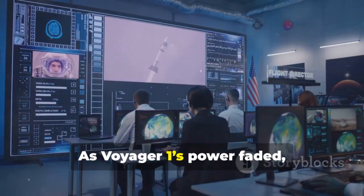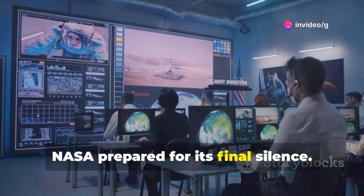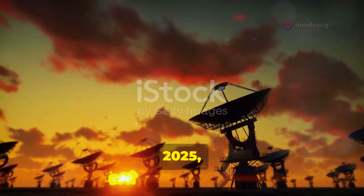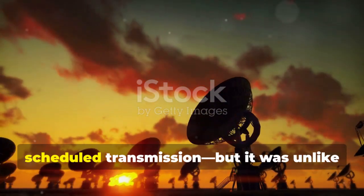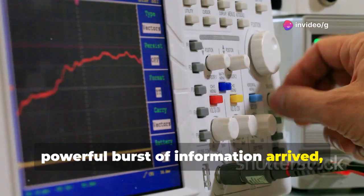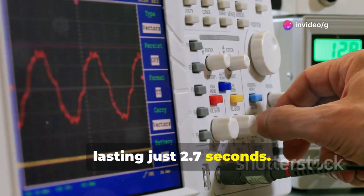As Voyager 1's power faded, NASA prepared for its final silence. On February 12, 2025, the Deep Space Network received a scheduled transmission, but it was unlike any before. Instead of routine data, a short, powerful burst of information arrived, lasting just 2.7 seconds.